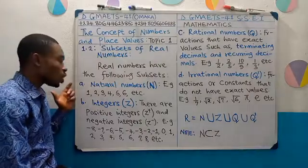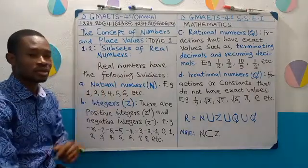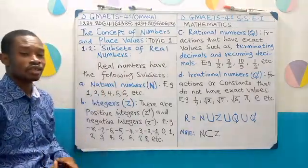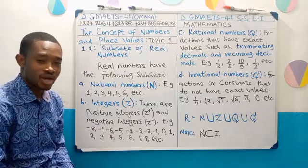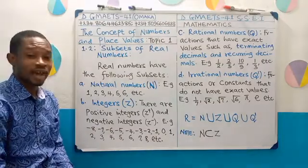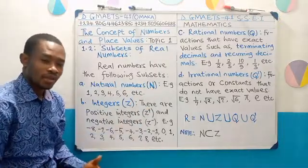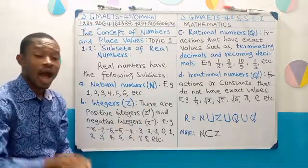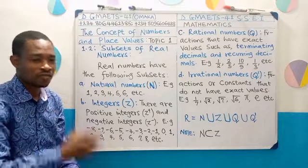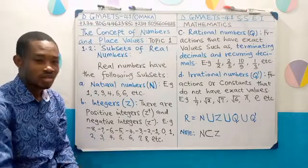We have them, which we call natural numbers. And we use N to represent natural numbers. Capital letter N. That's uppercase. Examples of natural numbers are our counting numbers: 1, 2, 3, 4, 5, 6, 7, 8. And you move on.